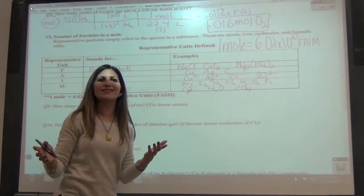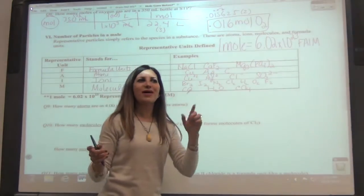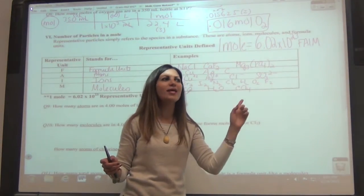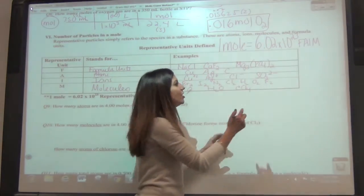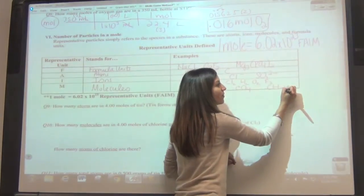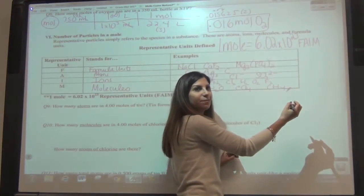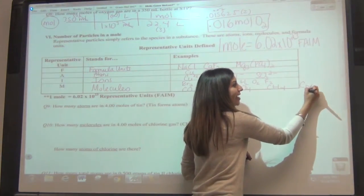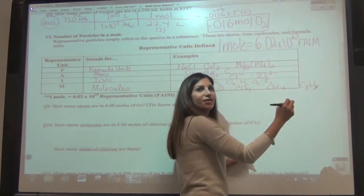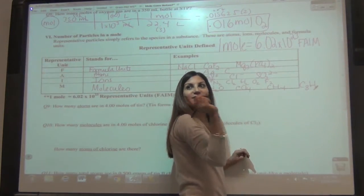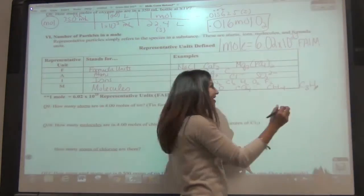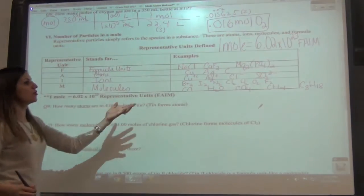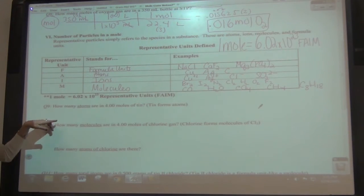Even the alkanes are molecules — methane, ethane, propane, butane. Methane is CH4. For octane, you take 8 carbons, multiply by two and add two, giving you C8H18. So those would also be considered molecules.